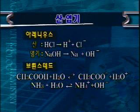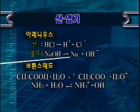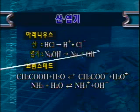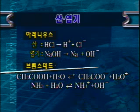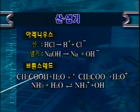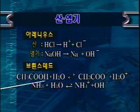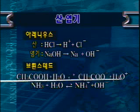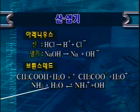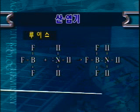산과 염기 개념은 과학이 발달하면서 몇 사람들이 정의했습니다. 아레니우스는 산은 수소이온을 내어놓는 것, 염기는 수산이온을 내어놓는 것으로 정의했습니다. 이것이 가장 좁은 의미의 산 염기 개념입니다. 그 후 브뢴스테드는 수소이온을 내어놓는 것을 산, 수소이온을 받아들이는 것을 염기로 정의했습니다. 예를 들어 초산은 수소이온을 물에 내놓아 마이너스 이온으로 전환되고 하이드로늄이온이 생성됩니다. 암모니아는 염기로서 물로부터 수소이온을 받아 암모늄이온이 됩니다.